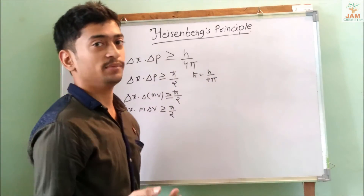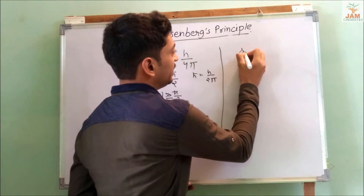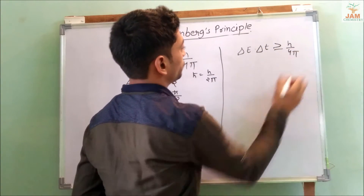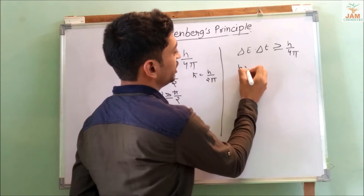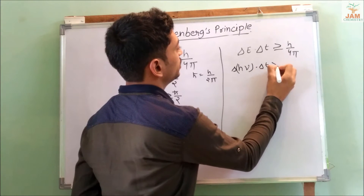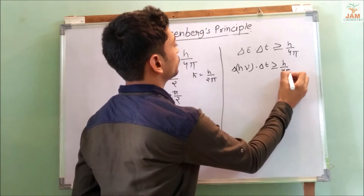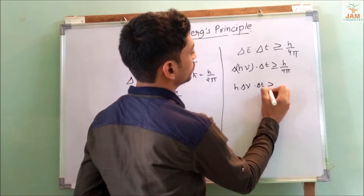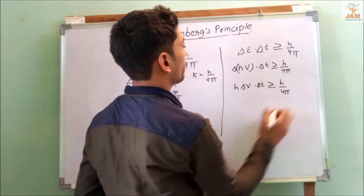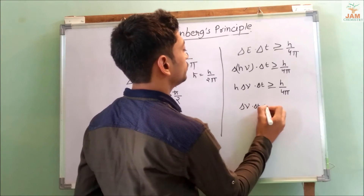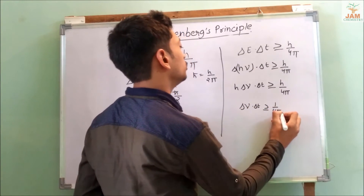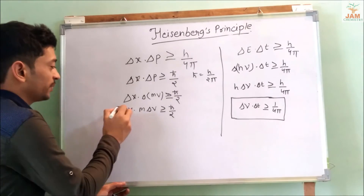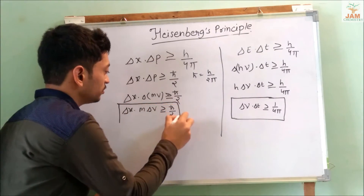In terms of energy and time, it can also be written as delta E into delta t is greater than or equal to h upon 4 pi, where delta E is h times delta nu. So h delta nu into delta t is greater than or equal to 1 upon 4 pi. The expression in terms of energy and time is this form, and the expression in terms of position and momentum is the other form.